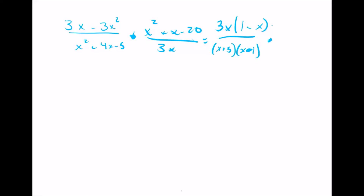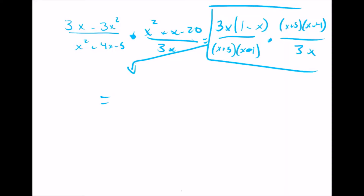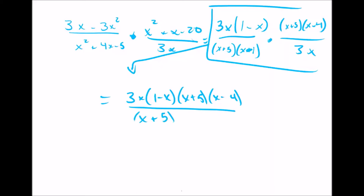On the top of the second fraction, x squared plus x minus 20 factors into x plus 5 and x minus 4. On the bottom, we're left with 3x. Now we're going to multiply those together. We multiply the tops together: 3x times 1 minus x, times x plus 5, times x minus 4. On the bottom, we have x plus 5 times x minus 1, and 3x.